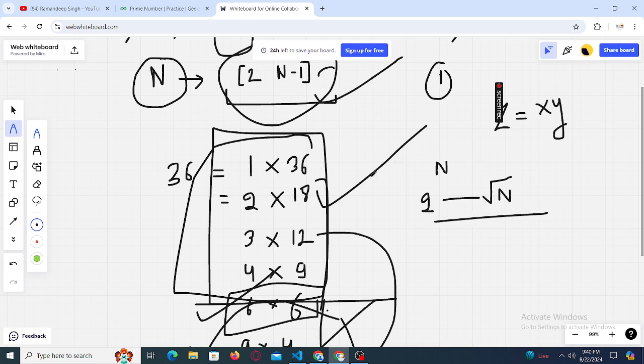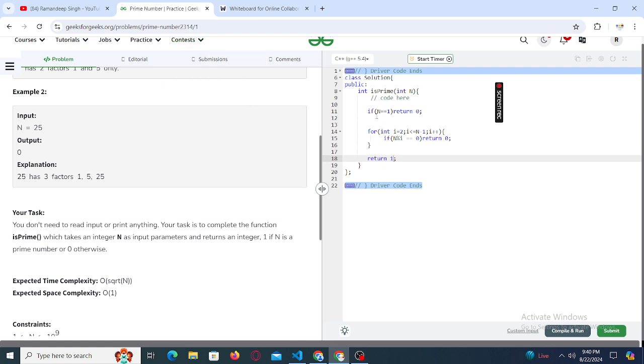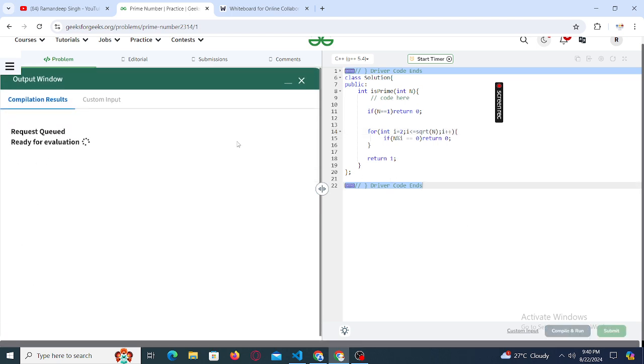And now repeat the same procedure which we did earlier. So here in this code, all we have to do is to change this n to sqrt of n. That's all. Let us see if it works.